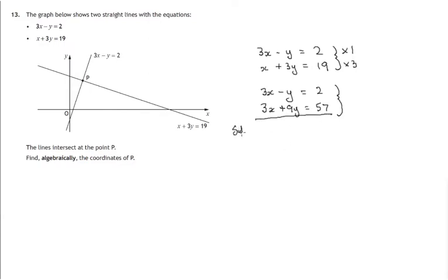3x away from 3x, 0. Watch this next one. This is where a lot of mistakes are made. We've got minus y, negative y and we're taking away 9y.